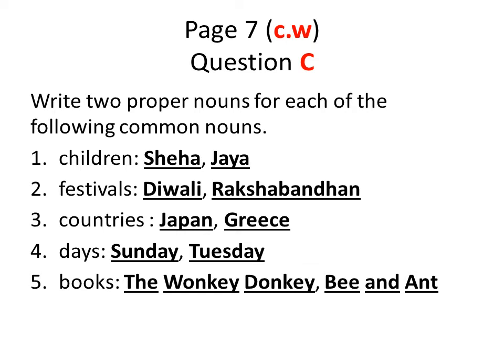What you have to do is write proper nouns for each of the common nouns. For example, for children, I wrote Sneha and Jaya. Notice that S of Sneha and J of Jaya are both in capital letters. If you wish, you can write other names, but they should be proper nouns and the first letter must be a capital letter.